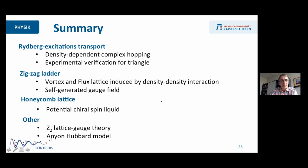Okay, so with this, let me just summarize. I hope I could convince you that the Rydberg excitation transport is interesting because it gives rise to density dependent complex hopping, which has been experimentally verified for triangles. And then I talked about the zigzag and the honeycomb lattice. There's a couple of interesting many body phases. What I did not talk about, but you can ask me questions later, is that using the same ingredients, you can build a Z2 lattice gauge series, or you can look at Anyon Hubbard models. Okay, so with this, I thank you and open for questions.